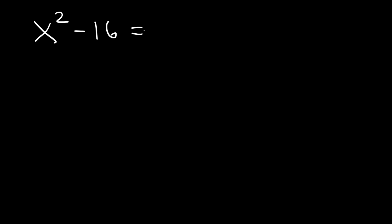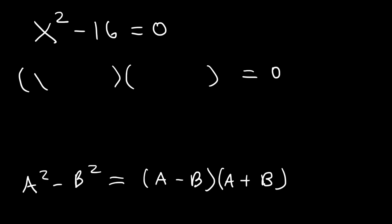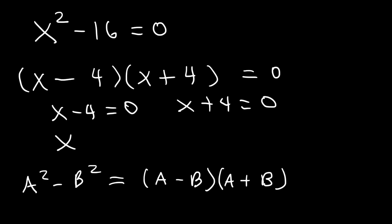Now what about this example? x squared minus 16. If it's equal to zero, what is the value of x? What we have is a difference of perfect squares: a squared minus b squared. To factor it, it's going to be a minus b times a plus b. Take the square root of x squared, which is x, and the square root of 16, which is 4. One factor is positive and the other is negative, so we set each factor equal to zero and get two answers: x is equal to positive 4 and negative 4.